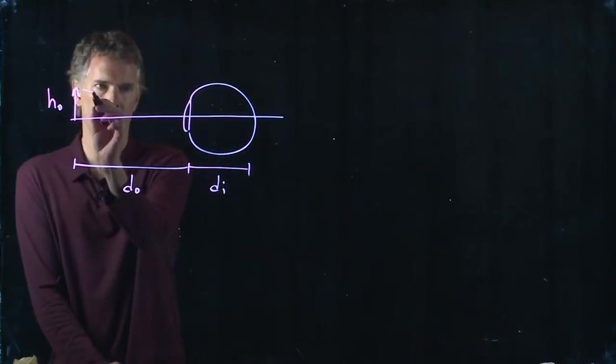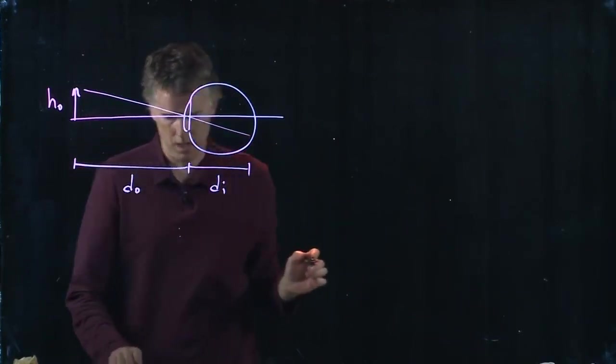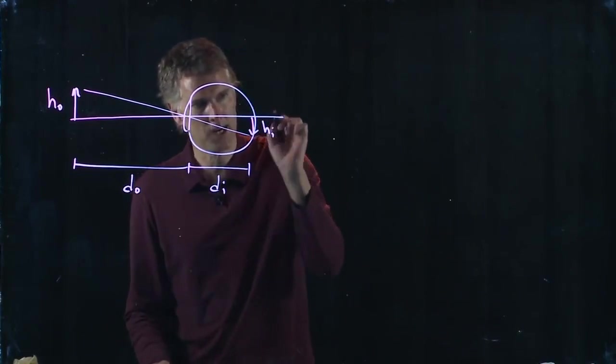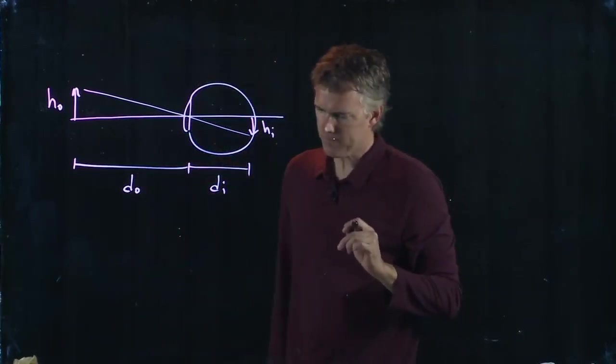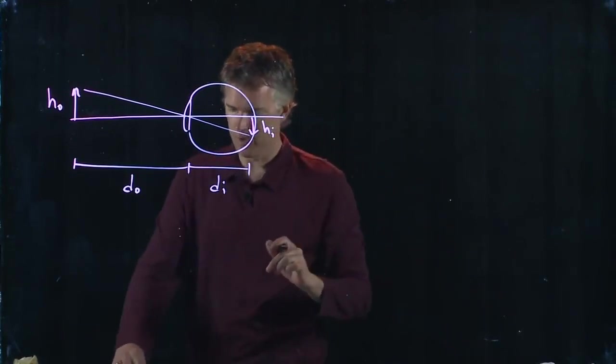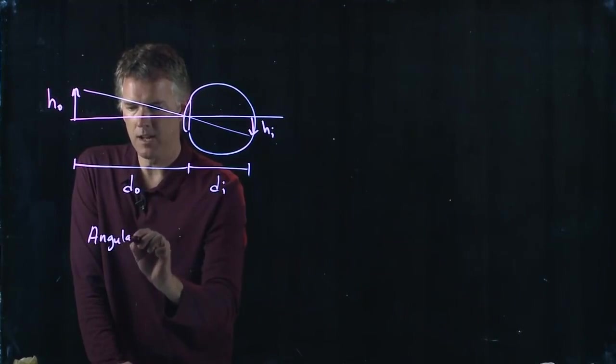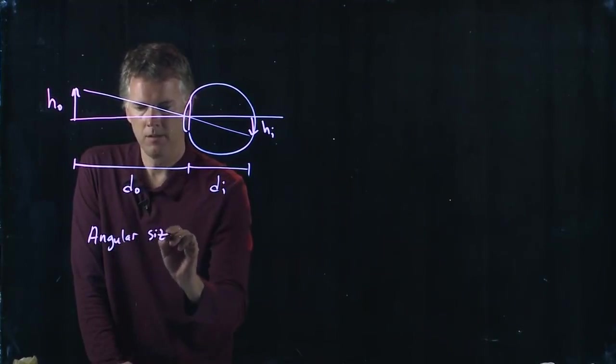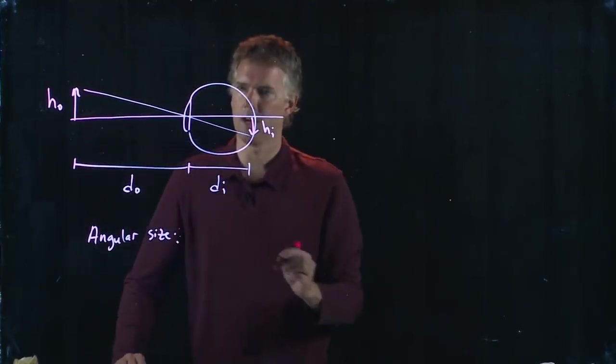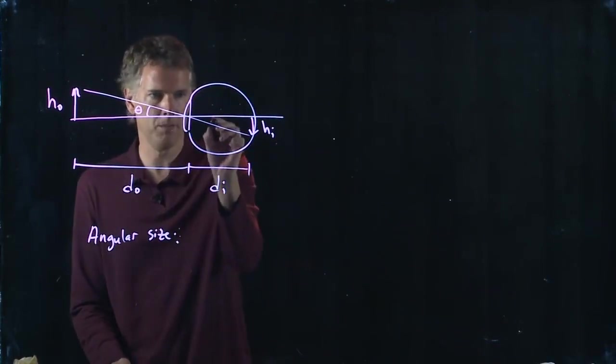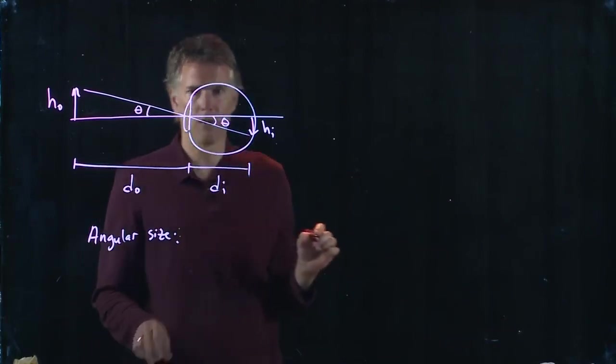We just said that the angular magnification will lead to an h_i right there, and we've got what we can call an angular size to this thing. If we define this angle theta, now since this ray didn't bend, angle